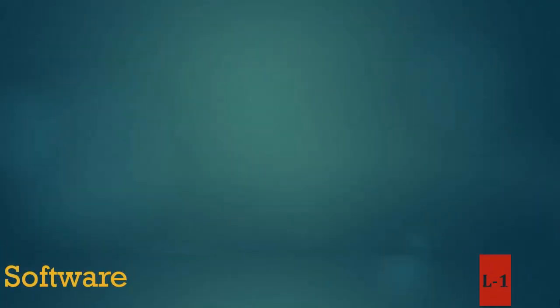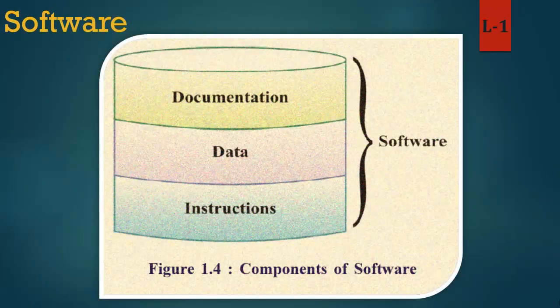In this image you can see the components of software. Documentation means to collect all documents from a website or program. Data means to keep necessary data from documentation. Instruction means giving instructions to the computer — like to print data. Is chavi mein aap software ke ghatak dekh sakte hain. Pralekhan ka matlab hai website ya kaaryakram se sabhi dastaavejin ko ikattha karna. Data ka arth hai pralekhan se aavashyak data rakhna. Nirdesh ka arth hai computer ko nirdesh dena jaise data print karna.